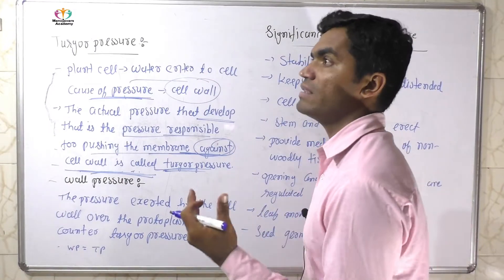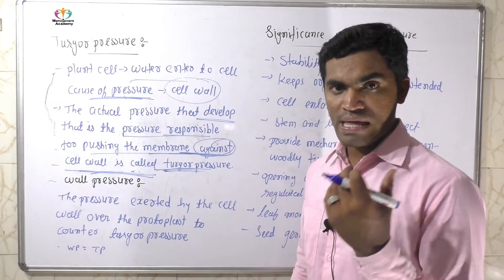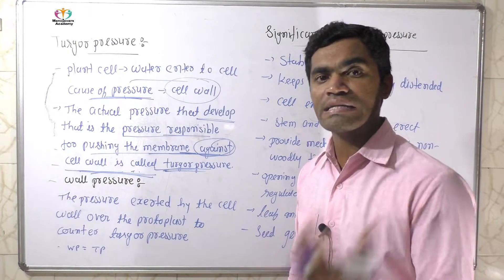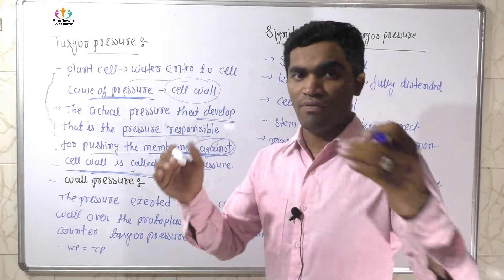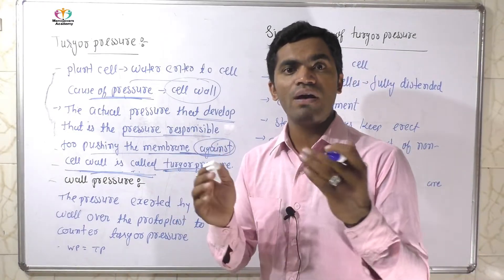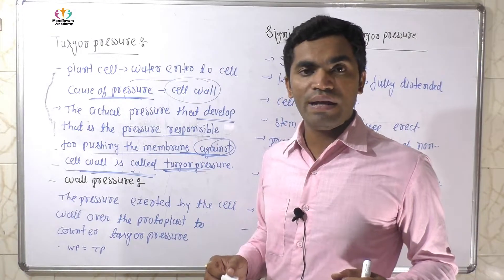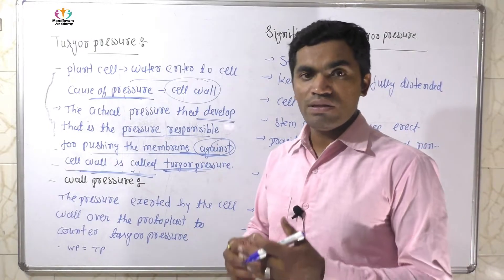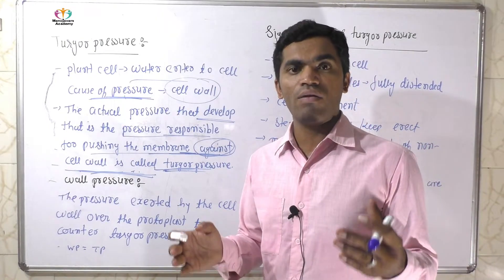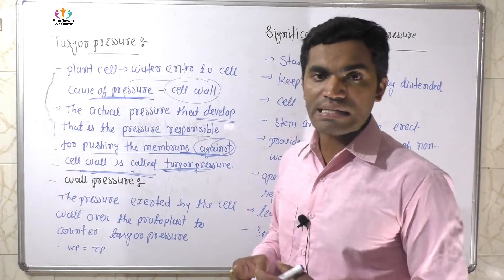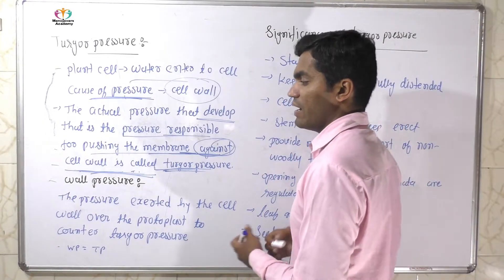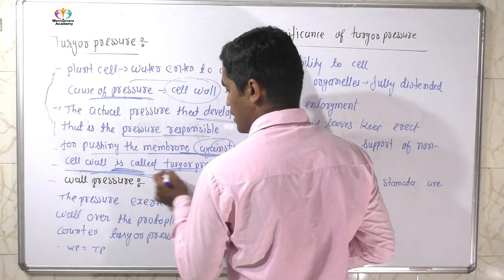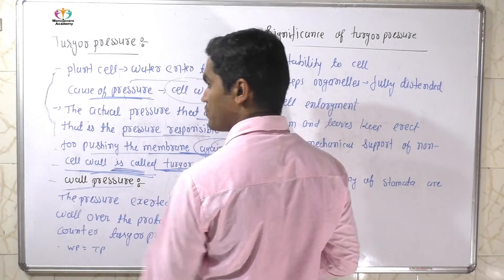When water enters the cell, the water volume or concentration of water increases. But the cell cannot easily expand because it has a semi-permeable membrane surrounded by the cell wall. So the volume of the cell increases but cannot easily burst. At that time, the water pressure on the cell wall is called turgor pressure.